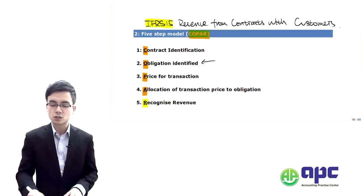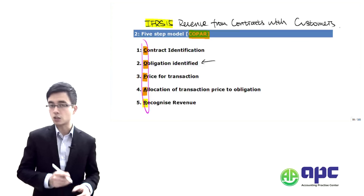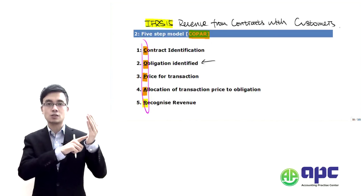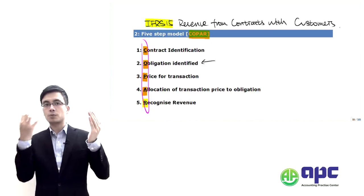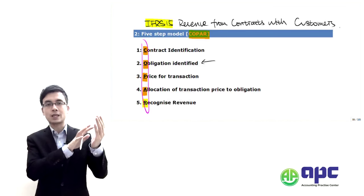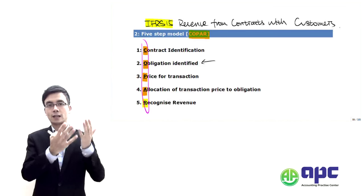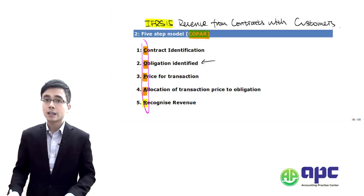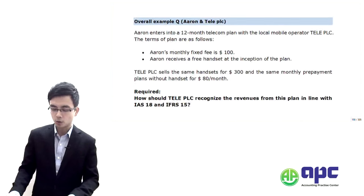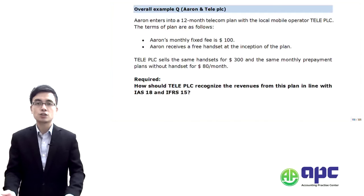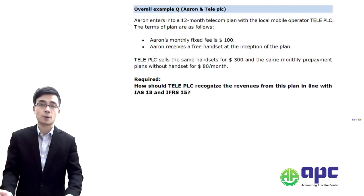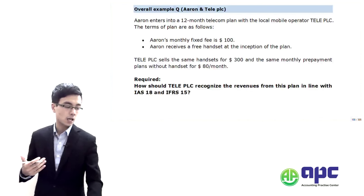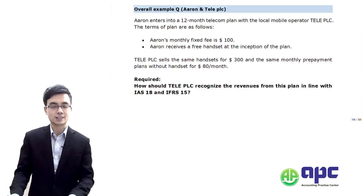The basic idea is straightforward: we use COPA, identify the contract with the obligations in there, spread the transaction price into those obligations, and recognise the revenue correspondingly. Let's see a particular example of how we're going to use this five-step model to recognise sales revenue under the new accounting standards, comparing it with the old accounting standard IFAS number 18.